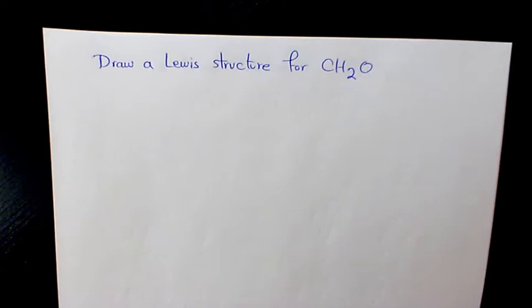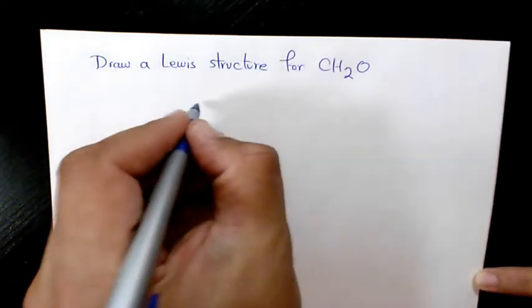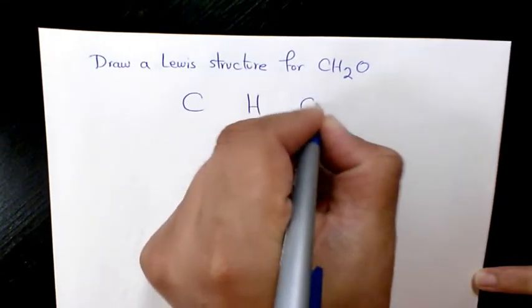So the first thing we need to do, we need to identify the central atom, which is usually the element with the highest bonding capacity. So we have carbon here, we have hydrogen, and we have oxygen.